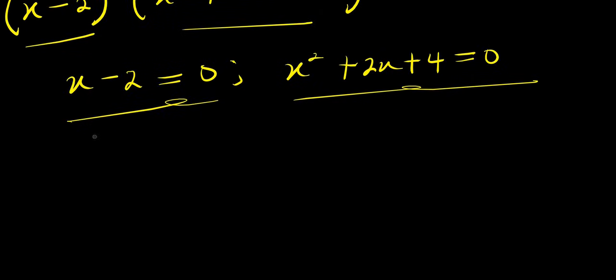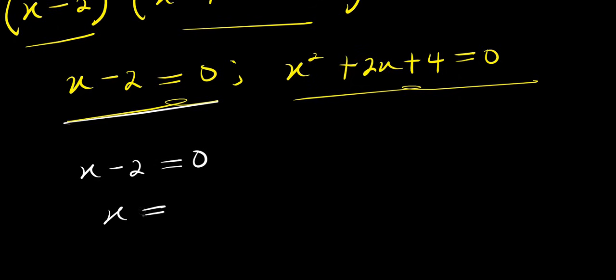Now we start with this one here: we have x minus 2 equals 0, from here we have x equals 2. So this is my x one.